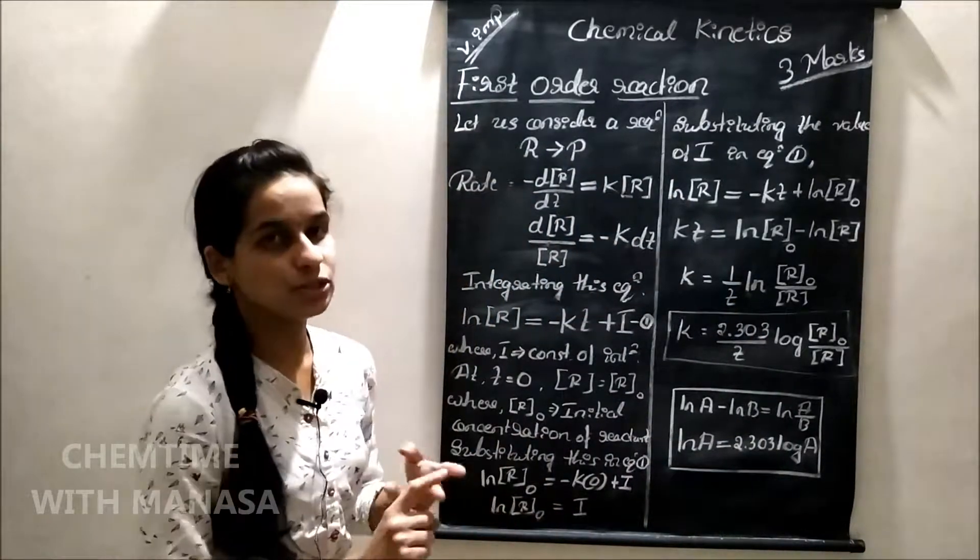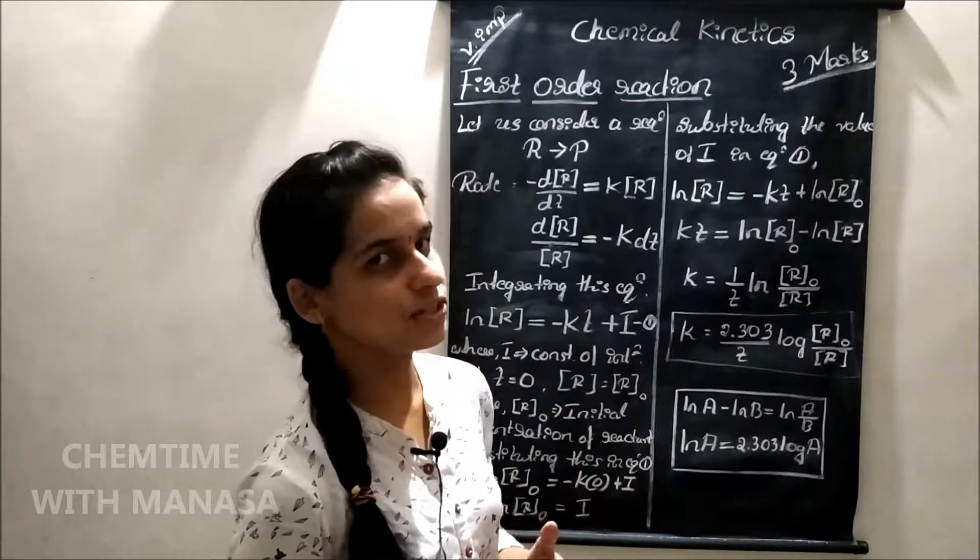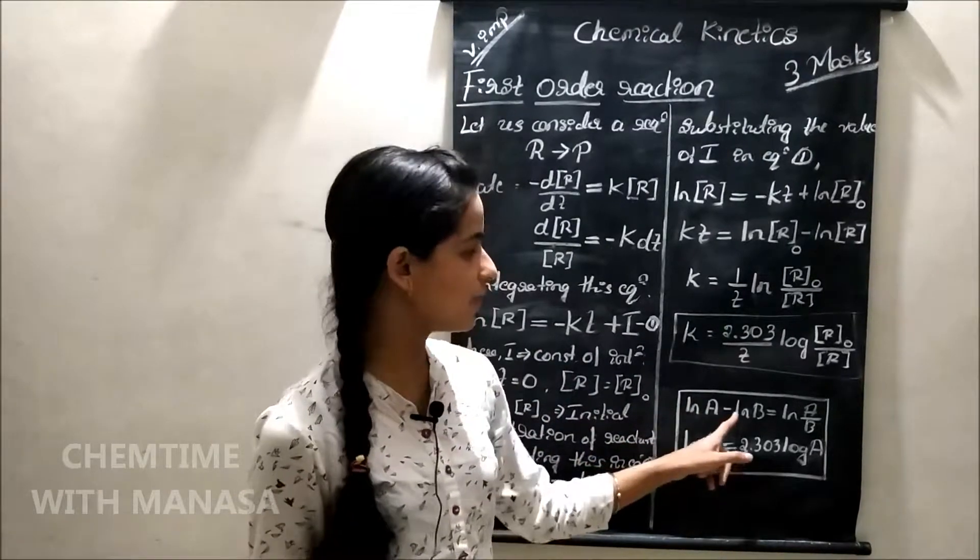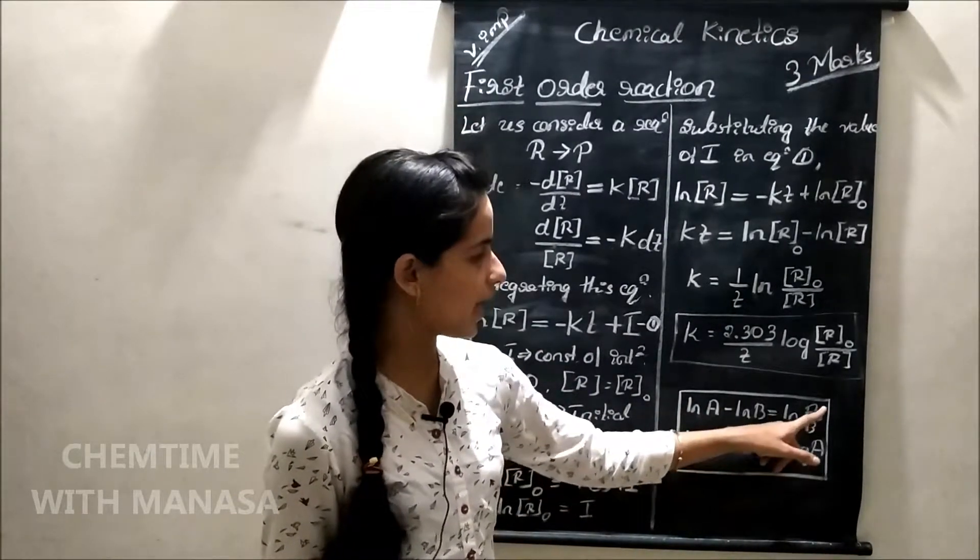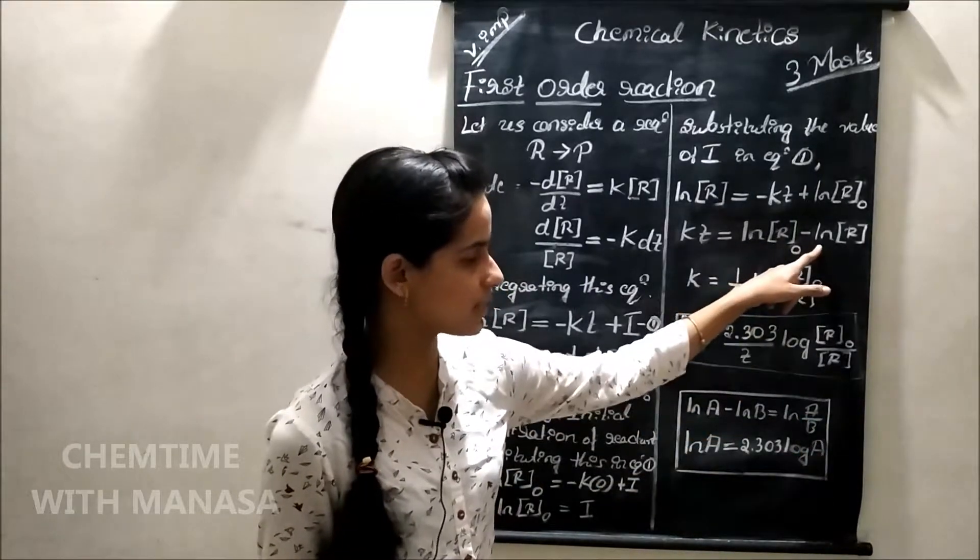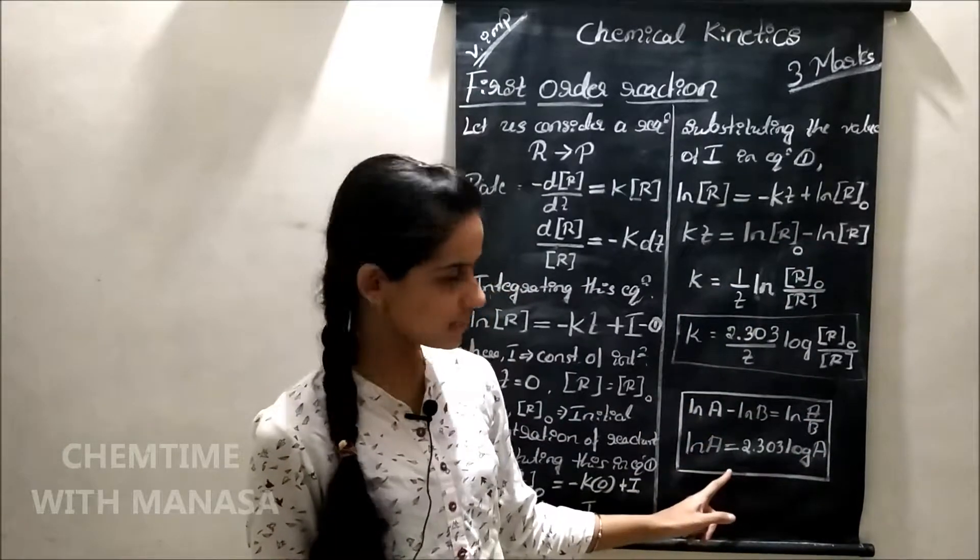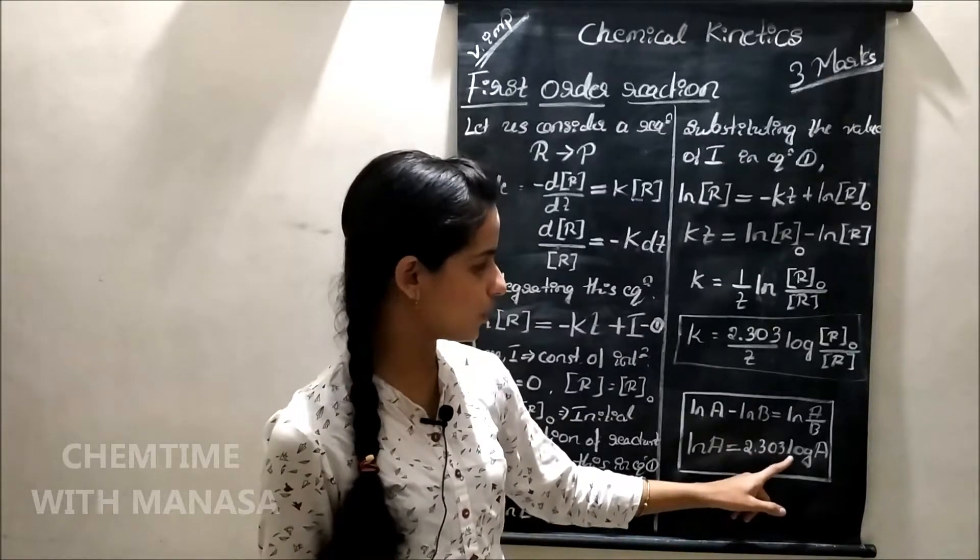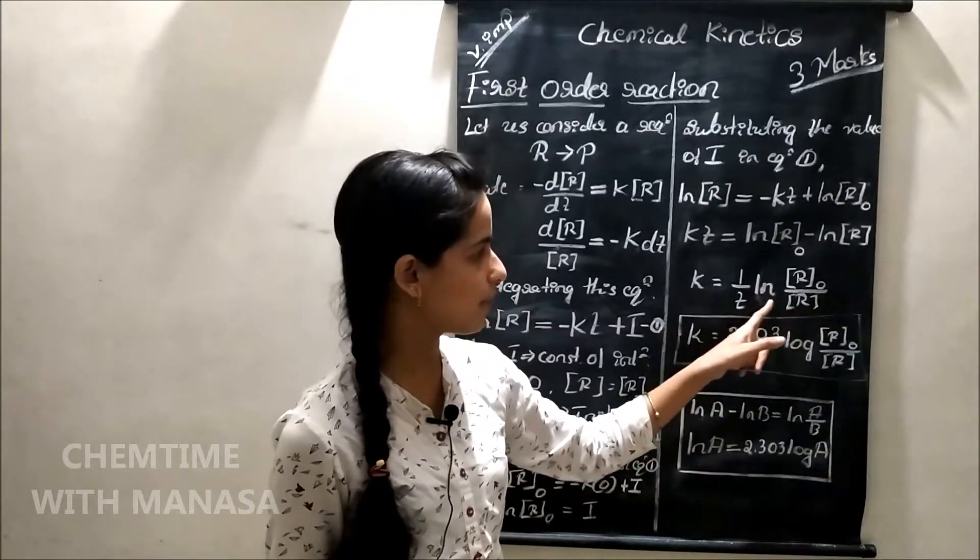Here, you have to remember two formulas or two basic concepts. That is, ln A minus ln B is equal to ln A by B which is applied in this step, and ln A is equal to 2.303 into log A which is applied in this step.